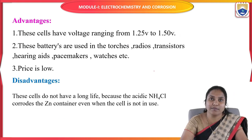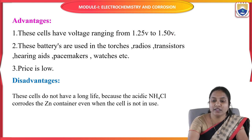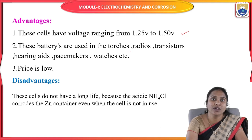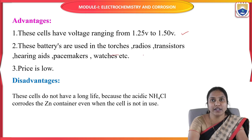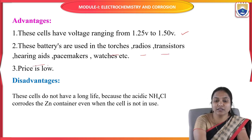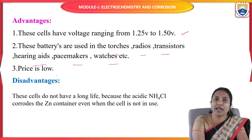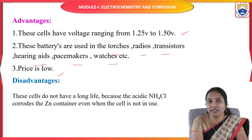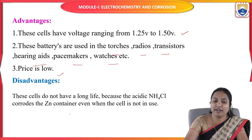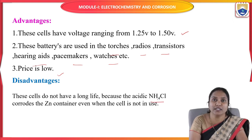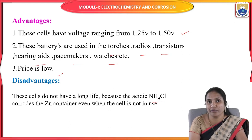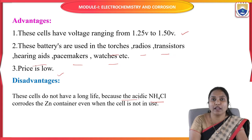The advantages of the Leclanche battery: the cell voltage ranges from 1.25 to 1.50 volts, and it is used in torches, radios, transistors, hearing aids, pacemakers, and watches. Its price is very low. The main disadvantage is that the battery does not have a long life because ammonium chloride corrodes the zinc container even when the cell is not in use.